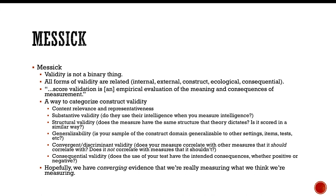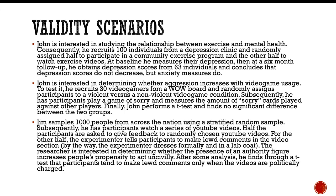And finally, consequential validity. So does the use of your test have the intended consequences, whether positive or negative? So remember when we measure constructs, sometimes the labels that we attach to these constructs have consequences. If you have a measure of guilt, for example, a DNA test and somebody goes to jail because of your DNA test, is that an intended consequence? If it's not, then maybe it doesn't have good construct validity. If it does, now remember, consequences can be bad and yet they still have good consequential validity. So across all these, hopefully we have converging evidence that what we're really measuring is what we hope and think we're measuring.